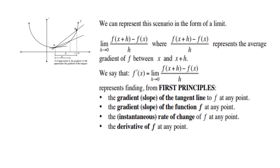We can represent this scenario in the form of a limit. From the previous lessons, f(x+h) minus f(x) over h was the gradient between two points. Now if you add the limit as h approaches zero, then we are dealing with what we call the gradient at a point on the curve — also called gradient from first principles, the gradient of the tangent line at any point, the instantaneous rate of change, or the derivative at the point of f.